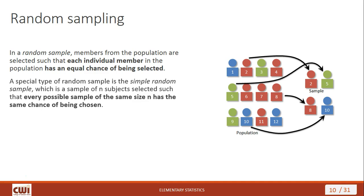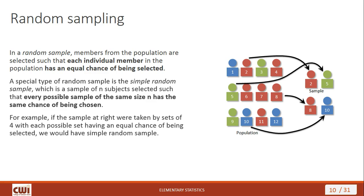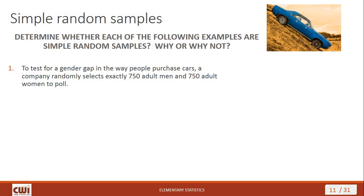There's a special type of random sample called the simple random sample — a sample of n subjects selected such that every possible sample of the same size has the same chance of being chosen. So we selected 2, 5, 8, and 10 from our list numbered 1 through 12. In order to be a simple random sample, every possible sample of 4 participants must have the same chance of being chosen — not just each individual, but each set of the same number.